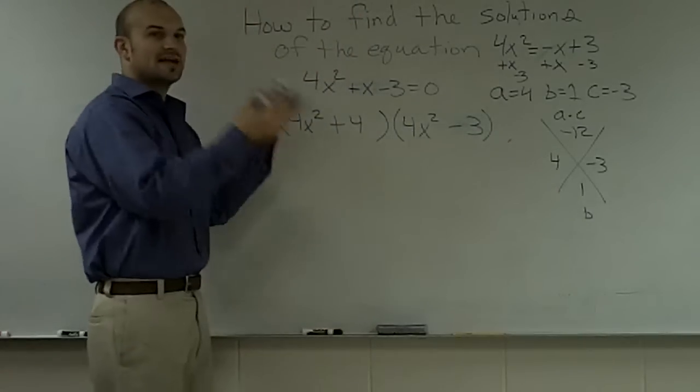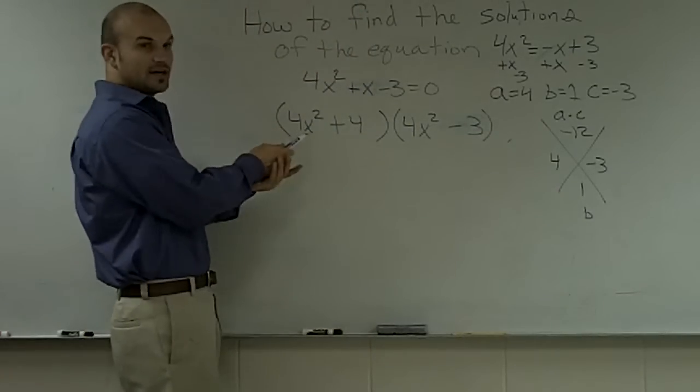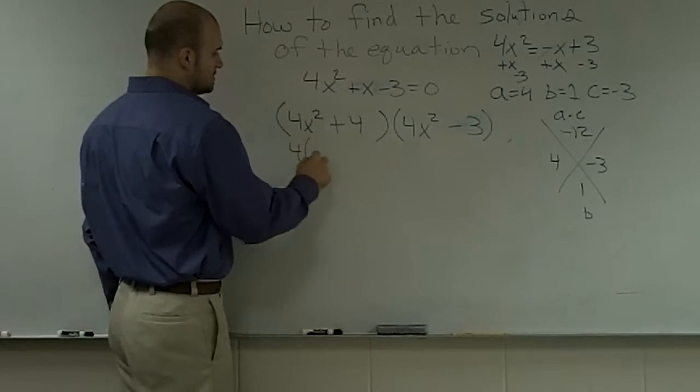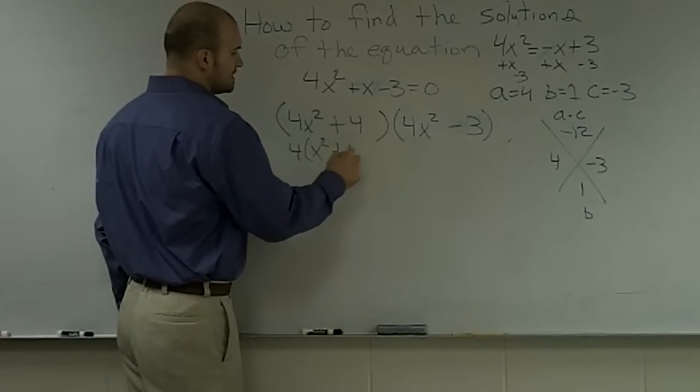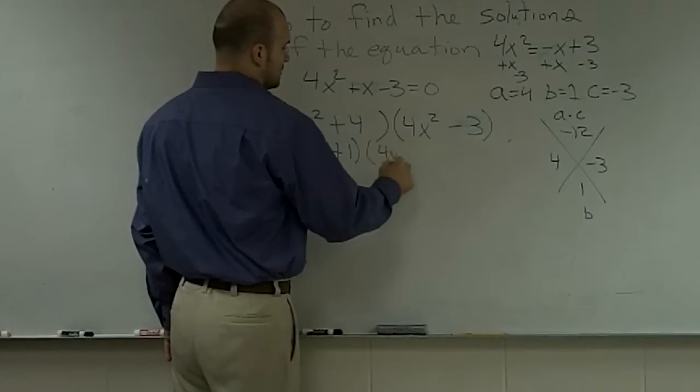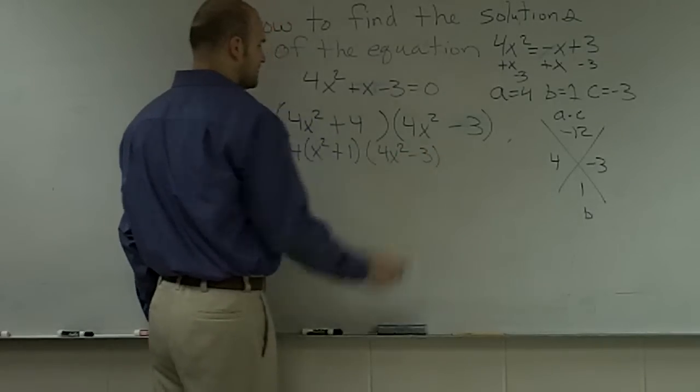Now, all you do is you factor out your common terms. Well, here I can factor out a 4, right? So x plus 1 times 4x minus 3.